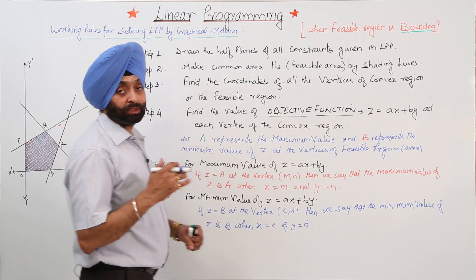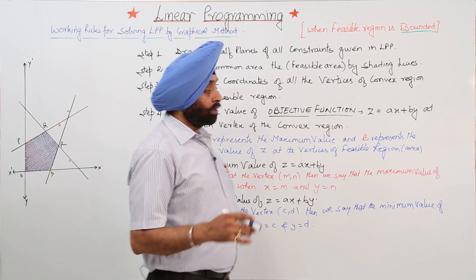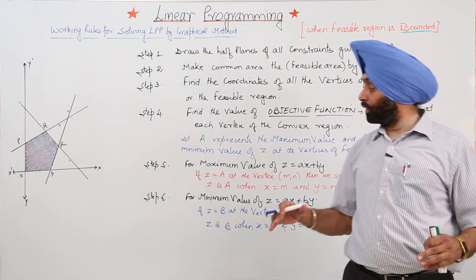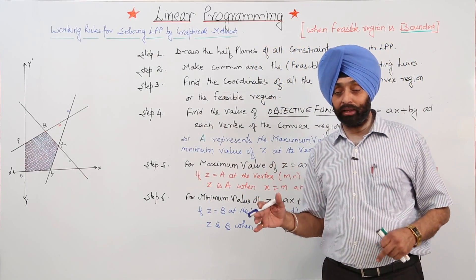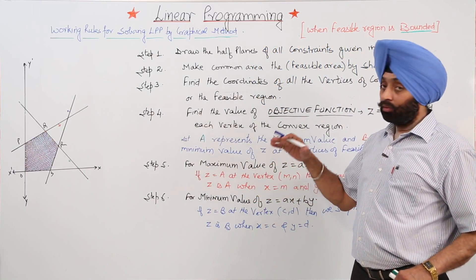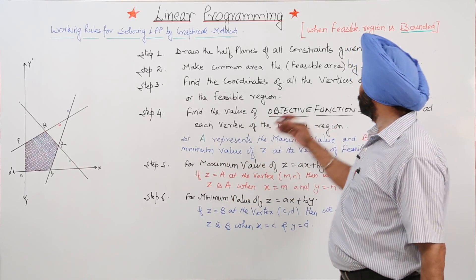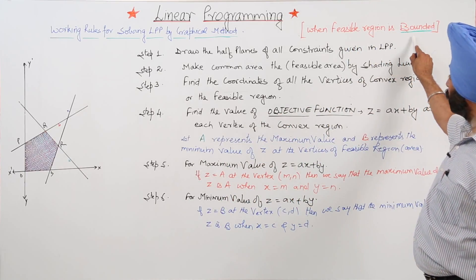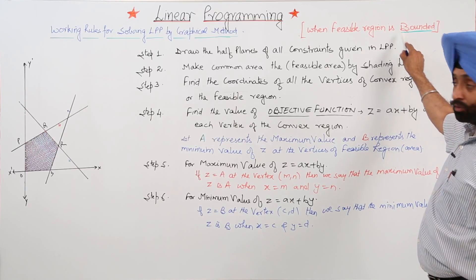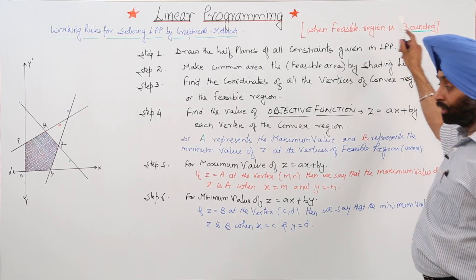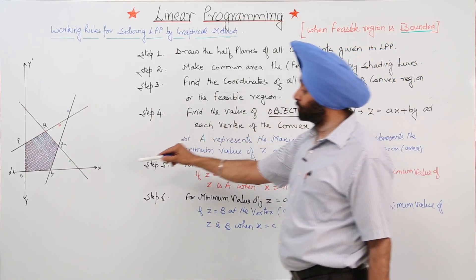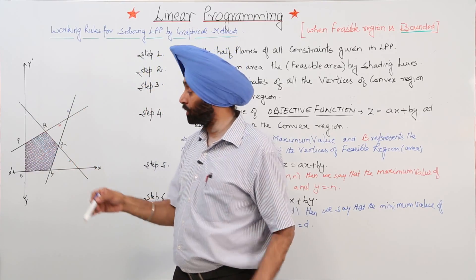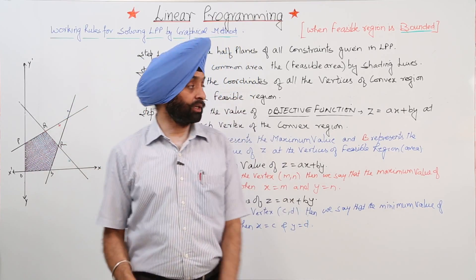These were the basic steps for how to locate the maximum or minimum point in a given feasible area which is bounded. We have done all these steps for the bounded region. When we can make a circle around it, that is called a bounded area.